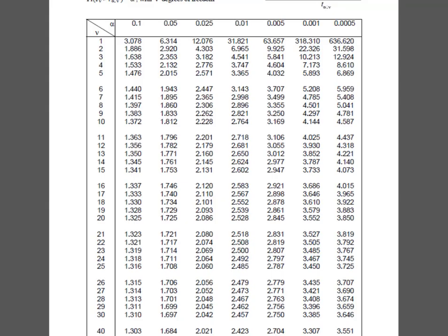In this second case, I have an area in the tail of 0.05 and 29 degrees of freedom. I'll find where that column and row intersect, and my value for t alpha over 2 is 1.699.